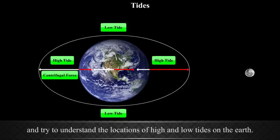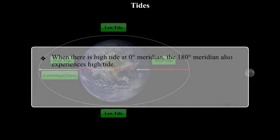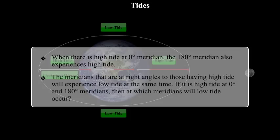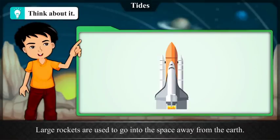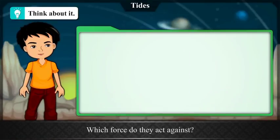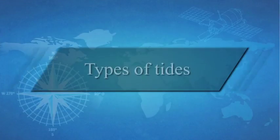Try to understand the locations of high and low tides on the Earth. When there is a high tide at the 0-degree meridian, the 180-degree meridian also experiences high tide. The meridians at right angles to those having high tide will experience low tide at the same time. If it is high tide at the 0-degree and 180-degree meridians, think about which meridians will experience low tide. Large rockets are used to go into space away from the Earth — which force do they act against?